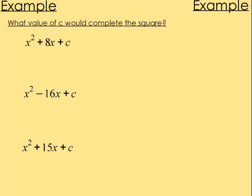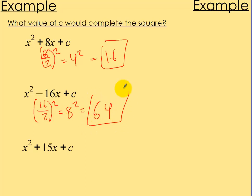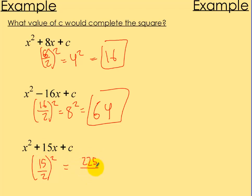Let's try some practice examples — pause the video. What value of c would complete the square? For x squared plus 8x plus c: b is 8, so c equals 8 divided by 2 squared, which is 4 squared, which is 16. For the next one with 16x: c equals 16 divided by 2 squared, which is 8 squared, which is 64. For 15x plus c: c equals 15 over 2 squared, which is 225 over 4.